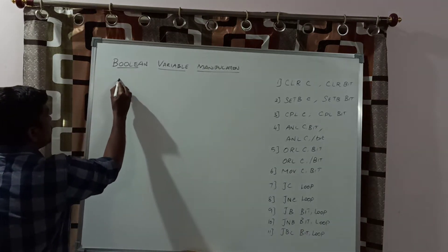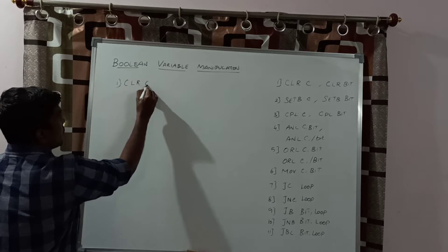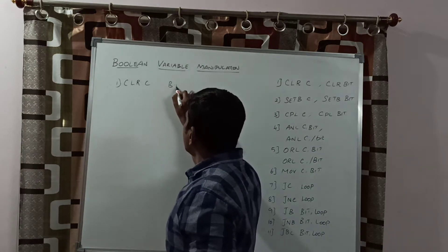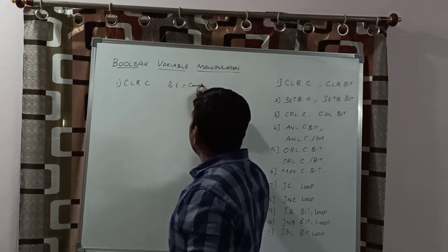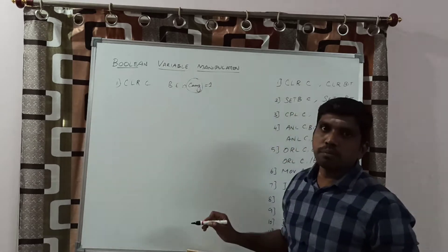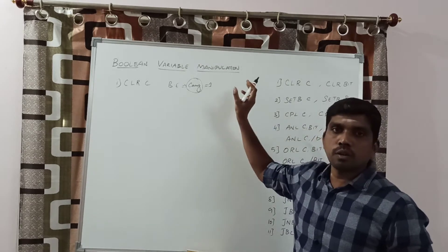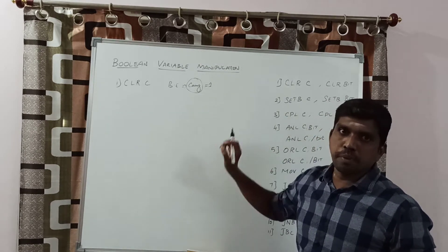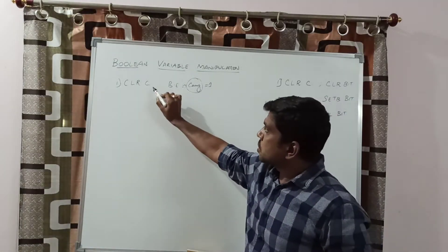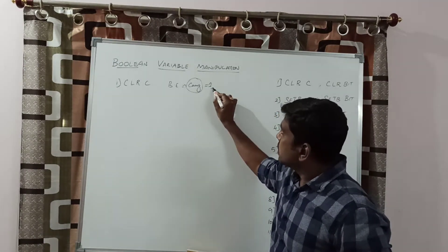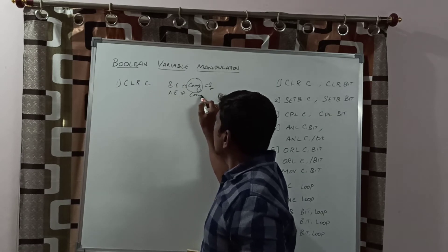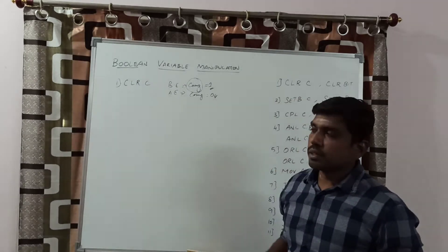The first instruction is CLR C, which clears the carry bit. The carry bit value is obtained from the flag register. In the 8051 Microcontroller, there is also a flag register, also called PSW (Program Status Word). Before execution, the carry value equals 1. After execution of this instruction, the carry value is cleared. After execution, the carry value equals 0.